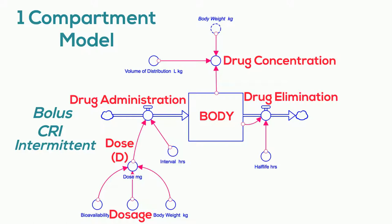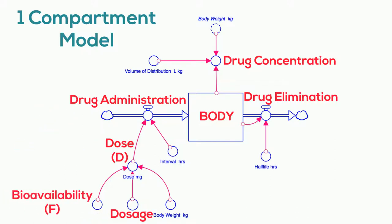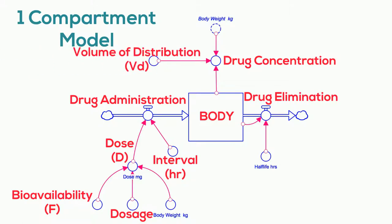Although we are first thinking about an intravenous route of administration, I'd like to mention the term bioavailability, also called F, which is the fraction of a drug dose administered that reaches the circulation. For now, with IV dosing, we'll call that 1, or 100%. The interval is a time separation — in this case hours — between multiple drug doses. Another term we need to consider is called the volume of distribution, or VD. It is not really a physiological volume of the body, but rather is simply a proportionality constant between the drug dose and the drug concentration.